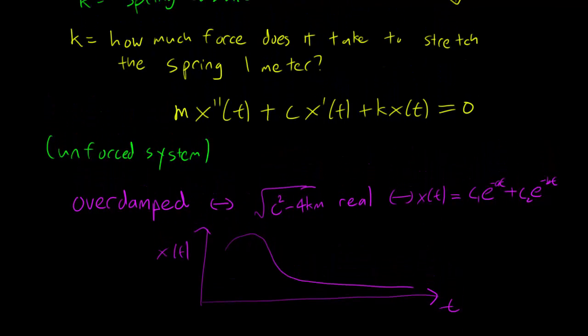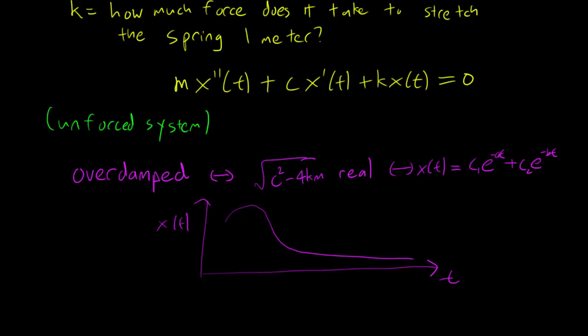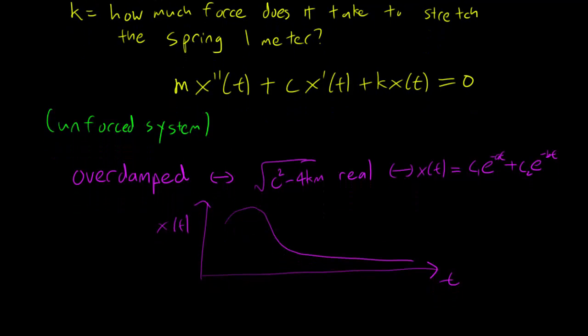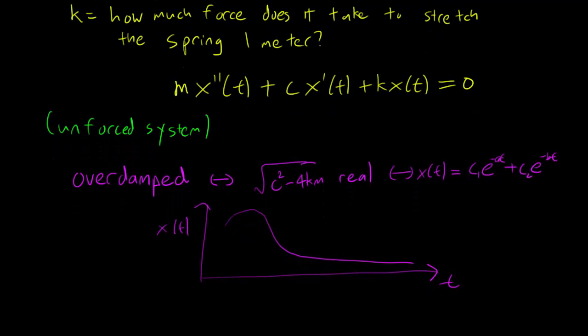The first case is when your system is overdamped, and that means that your c² - 4km term in your quadratic equation is real. So your general solution is just going to be c₁e^(rt) plus c₂ times another exponential. And both exponentials are going to be negative because m, c, and k are always positive. So what happens is that your x function is just going to die off this way. So c refers to the damping, the friction. So the friction is so high that the spring system doesn't even oscillate. So this is what happens when you have an overdamped system. So you need c² to be larger than 4km to make the square root real.